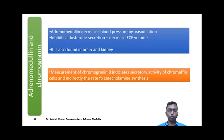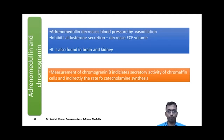Adrenomedullin is one of the hormones secreted from the adrenal medulla. It decreases blood pressure by vasodilation and inhibits aldosterone secretion, thereby decreasing ECF volume. It is also found in the brain and kidney. Chromogranin A is secreted along with catecholamines, and measuring its levels provides an indirect way to assess the rate of catecholamine synthesis.